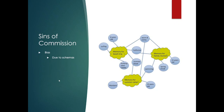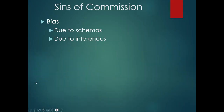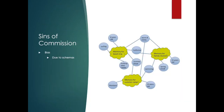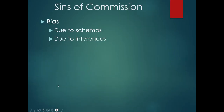Remember when we talked about spreading activation — if you think about any one node, it spreads its activation to related nodes, and the more strongly related they are, the more likely that spreading activation is to occur. A schema and a neural network, as we've discussed, are very similar ideas. Schemas may lead us to produce biased interpretations because once we start thinking one thing, it causes us to think about related things, pulling in past experience as we try to solve a problem or retrieve information.